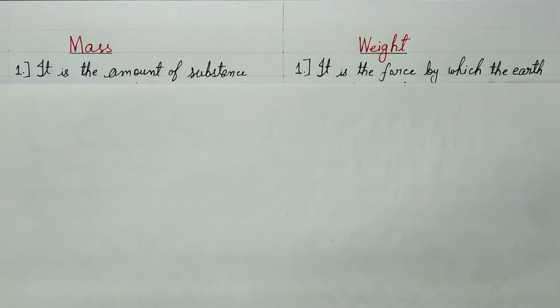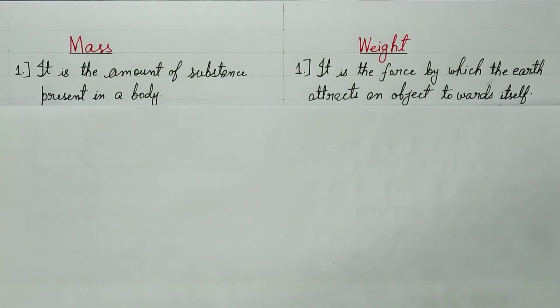First difference. Mass: It is the amount of substance present in our body. Weight: It is the force by which the earth attracts an object towards itself. Mass is the amount of substance which is present in any object.